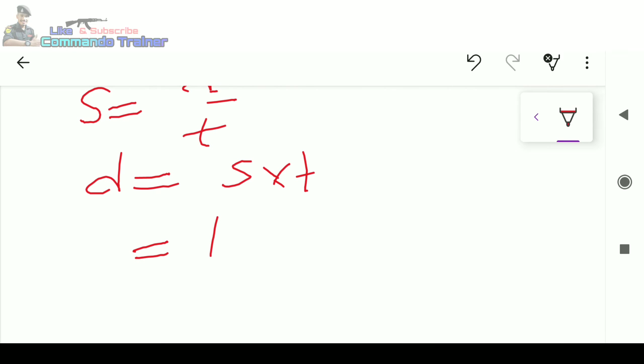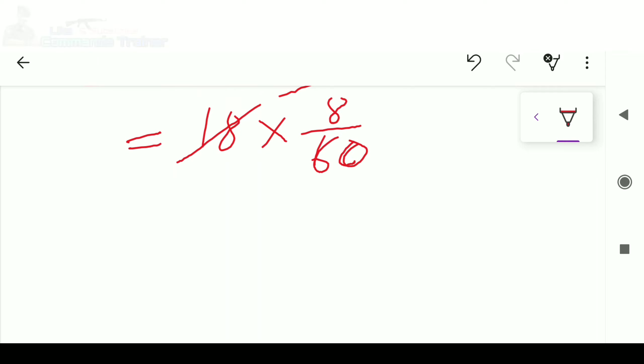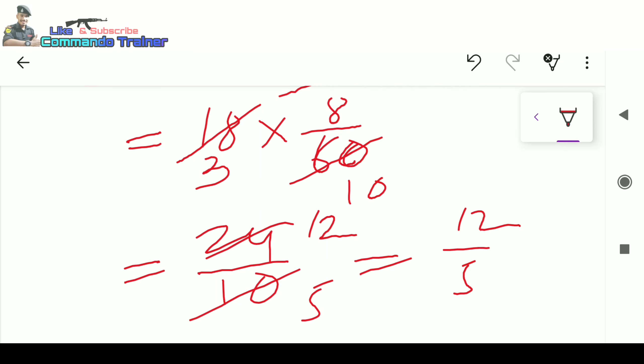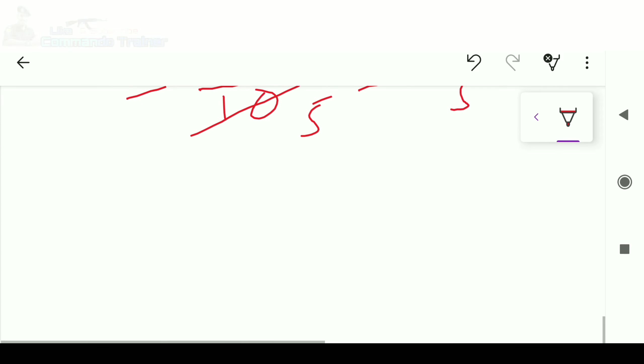Speed is 18 kilometer per hour. Time is given in minutes, so we need to convert. 8 minutes equals 8 divided by 60 hours. So distance equals 18 multiplied by 8 divided by 60, which simplifies to 12 by 5 kilometers.